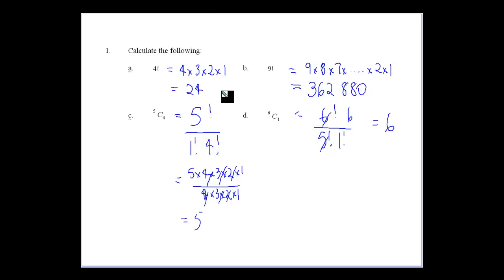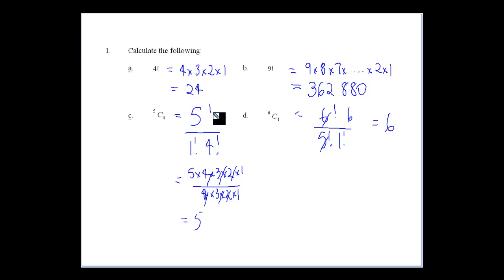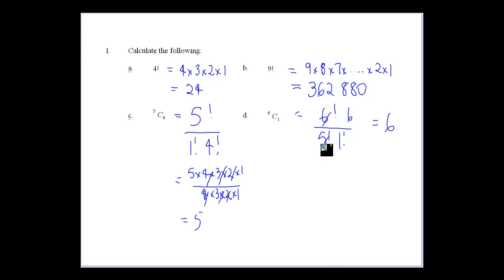Let's have a look at some calculations. 4 factorial: 4 times 3 times 2 times 1 is 24. For 9 factorial: 9 times 8 times 7 down to 1. For 5C4: 5 factorial divided by 1 factorial times 4 factorial — the 4 factorials cancel and leave you 5. For 6C1: 6 factorial over 5 factorial times 1 factorial gives us 6.